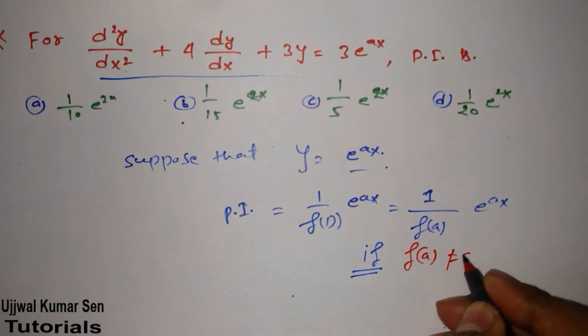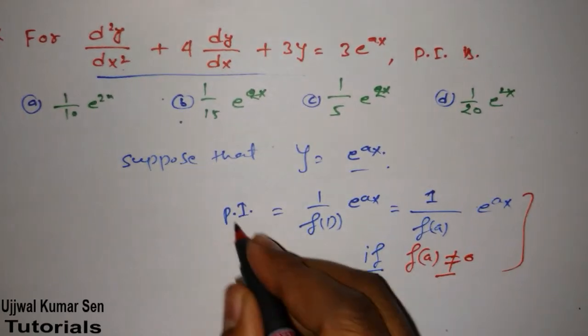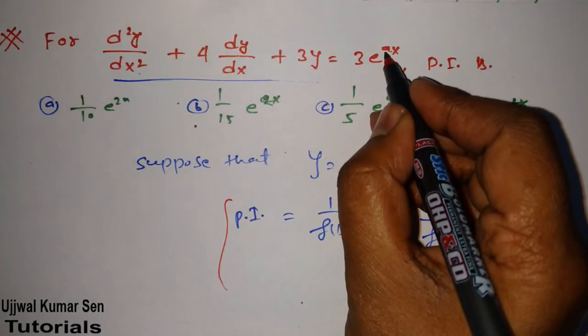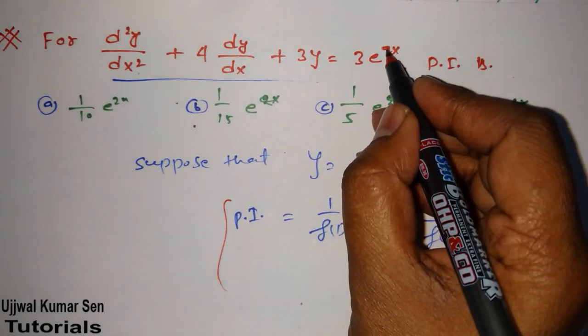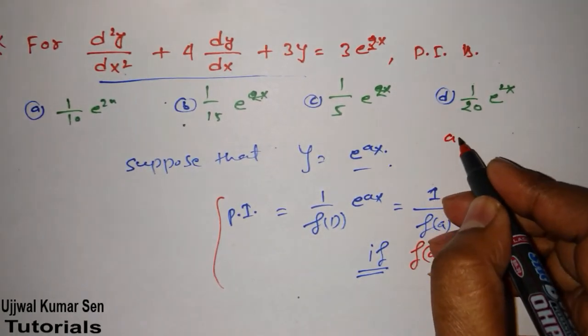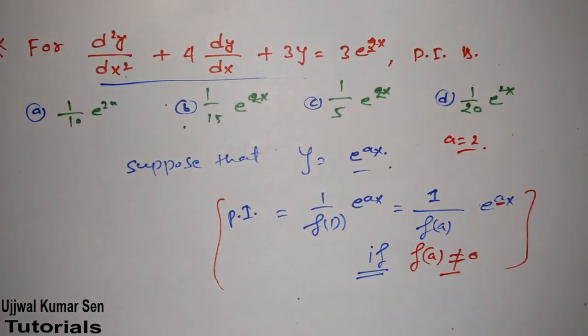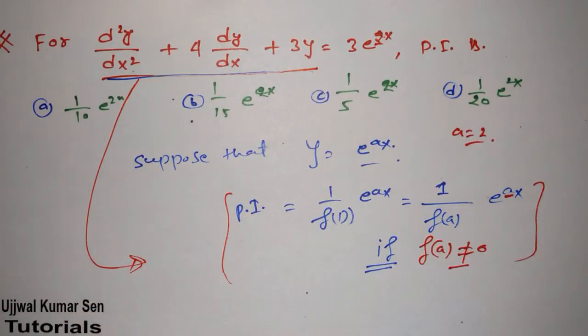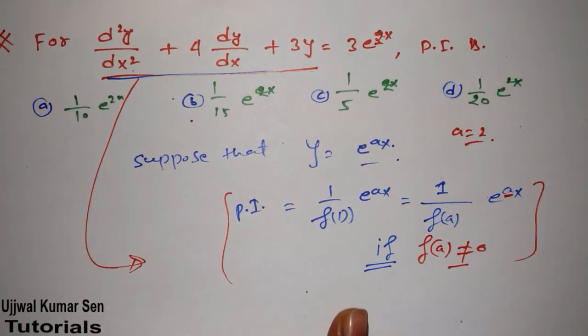If this is important: if f(a) is not equal to 0, then only we can write this. Now in place of a, what we have given? In the question we have given 2, so a is equal to 2.